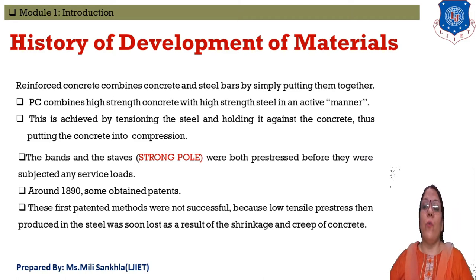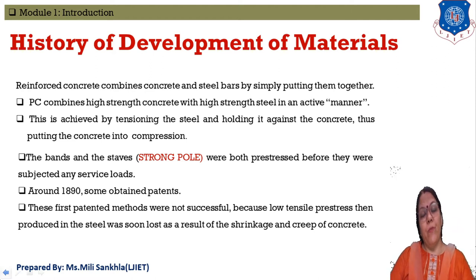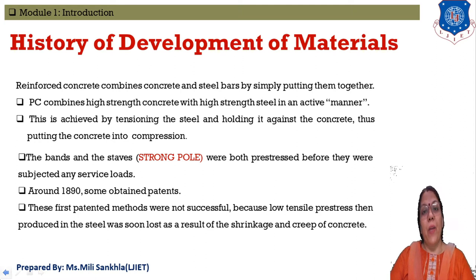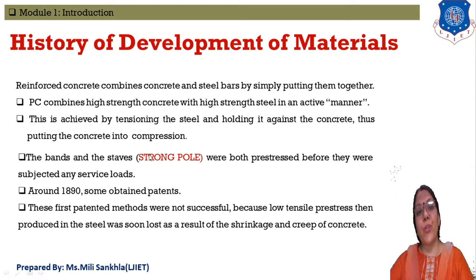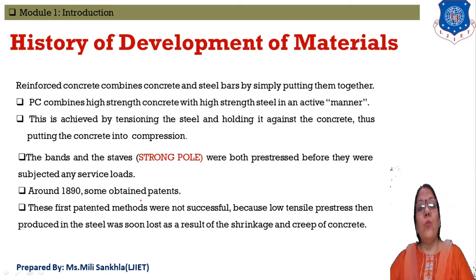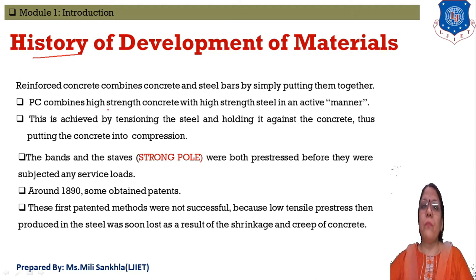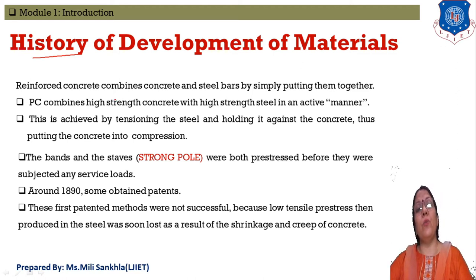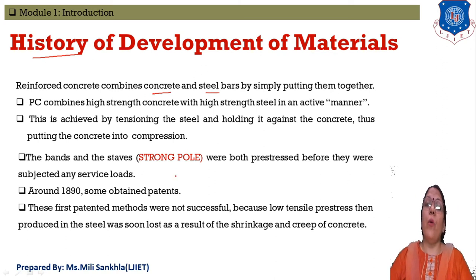The next topic is the history of development of materials. We already studied that first we used bamboos and bricks, then steel and concrete, and ultimately we use minimal time high-strength concrete and high-strength steel. Now we study this history in more detail. Reinforced concrete is a combination of concrete and steel.